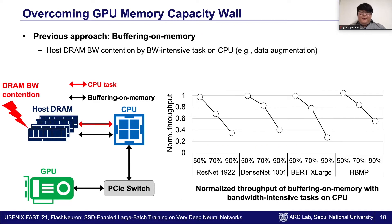One of the popular approaches is buffering of memory, which stores the intermediate activations in the host DRAM. However, these buffering of memory solutions can interfere with the CPU process for memory bandwidth. As shown in the graph, the throughput of DNN training can be noticeably degraded when the CPU is running bandwidth-intensive tasks.